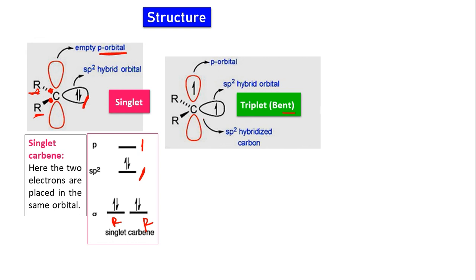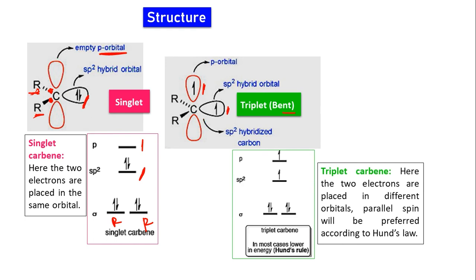For triplet carbene, the bent structure is most common. In bent triplet carbene (also sp2 hybridized), 2 sp2 orbitals form sigma bonds with the 2 R groups. But now the remaining 2 electrons are placed in different orbitals: one electron in the third sp2 hybrid orbital and one electron in the pure unhybridized p orbital — with parallel spins, as preferred by Hund's rule.